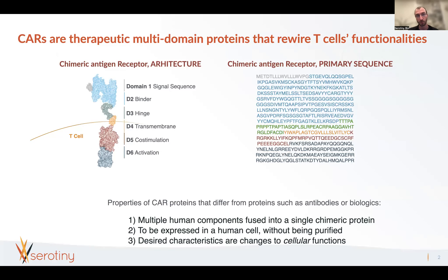Chimeric antigen receptors, or CARs, are therapeutic multi-domain proteins that rewire a T-cell's function. A CAR has an architecture with different sets of domains: a signal sequence, a binder, a hinge, transmembrane, co-stimulation, and activation domain. Each of these protein domains are joined together as a single amino acid sequence, and so every CAR has a primary amino acid sequence corresponding to all of those domains.